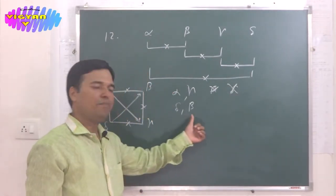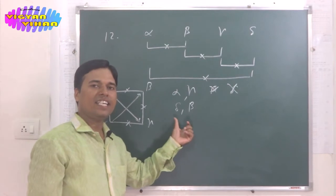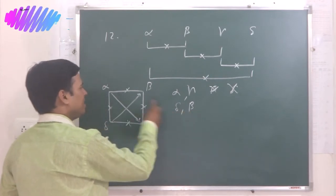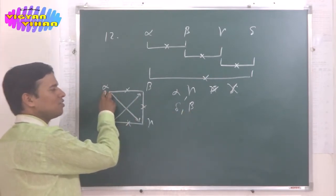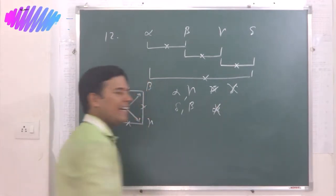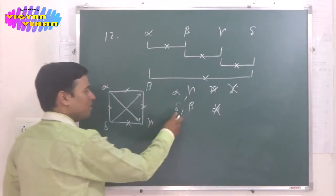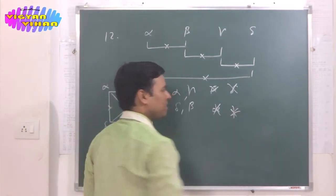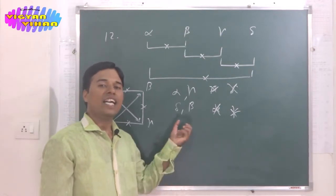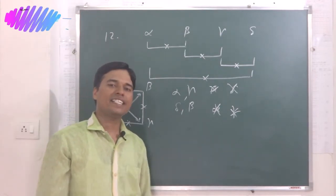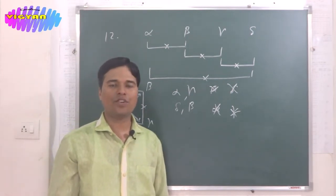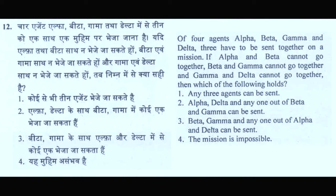Similarly, if beta and delta are the two agents, we cannot take alpha (because beta-alpha is forbidden) and we cannot take gamma (because delta-gamma is forbidden). Since a minimum of 3 agents is required and no valid third agent exists in either case, the mission is impossible. The correct answer is option 4 — mission is impossible.